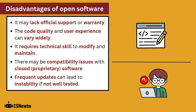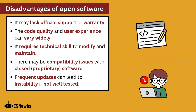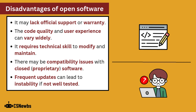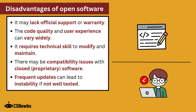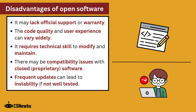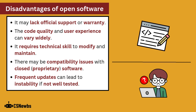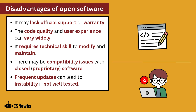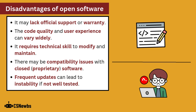Disadvantages of open software include that it may lack official support or warranty. The code quality and user experience may vary widely from project to project. It requires technical skill to modify and maintain. There may be compatibility issues with closed, also known as proprietary, software, and frequent updates can lead to instability if they're not well tested.